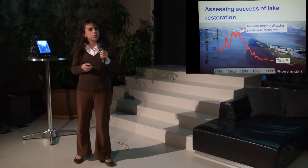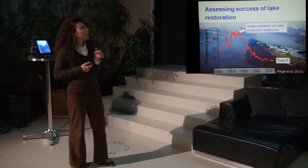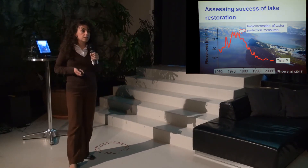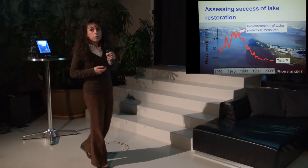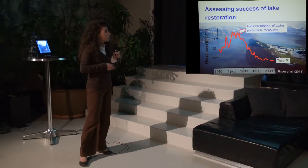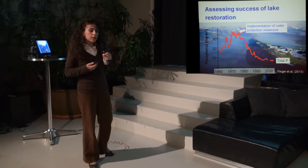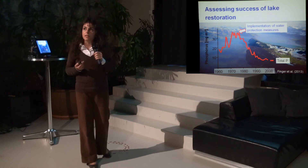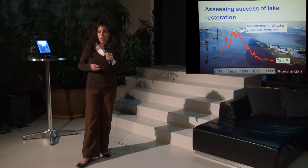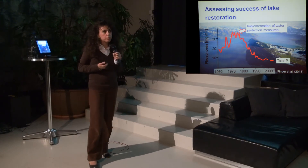Also in ecohydrology, we can evaluate the success of lake restoration by using modeling techniques to assess a water protection measure. For example, the implementation of sewage treatment plants and the ban of phosphorus detergent — this was done in Switzerland — to assess how much this affects primary production, meaning algae production in lakes.